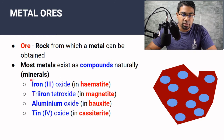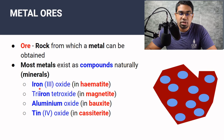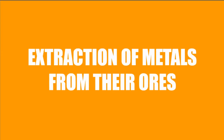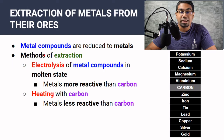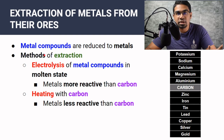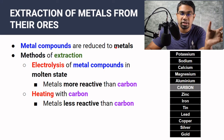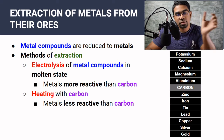We are not interested in the metal compounds — what we want is the metal itself. The process of getting the metal from this ore is what we call the extraction of metals. Metal compounds are reduced to metals, so when they exist in compounds and finally become the elemental state, they will always be reduced.